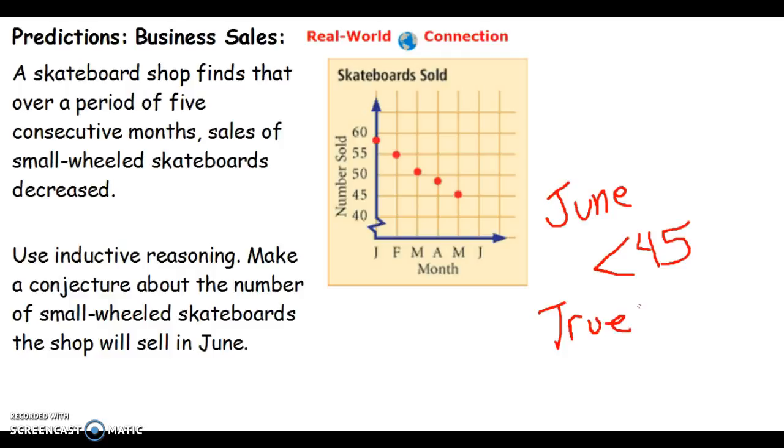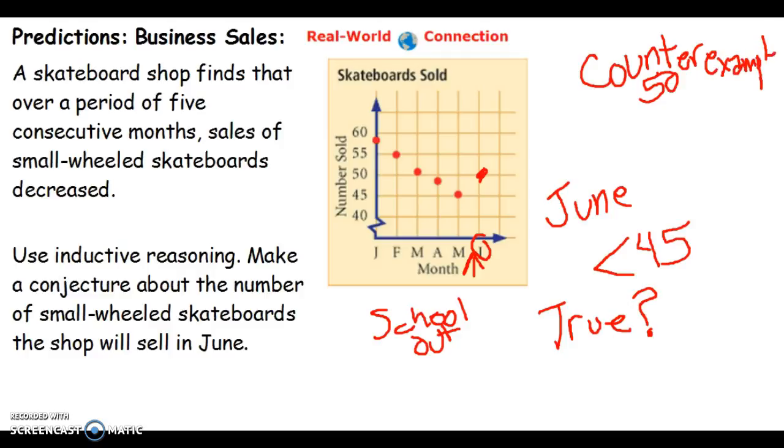But is that a true conjecture? Well, there's a couple things in business that might affect what's going to happen here in June. What could happen? Well, let's see what happens in June. School's out. And what happens when school's out? Kids get more active outside. So instead of going down, it could go up. So when June rolls around and we sell 50 skateboards, there is my counterexample of my conjecture. June rolled around and I sold 50 instead of less than 45. So that's not necessarily true.